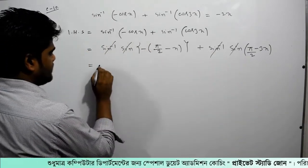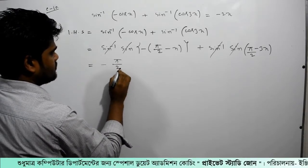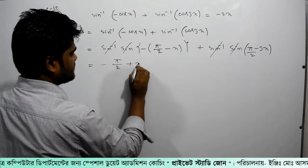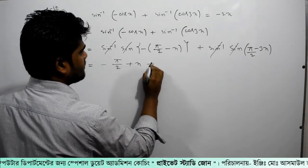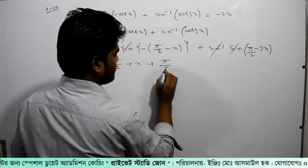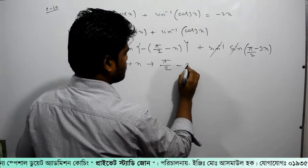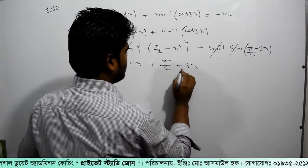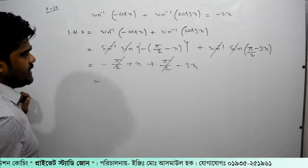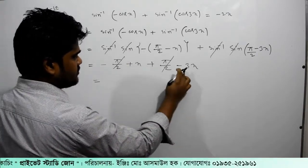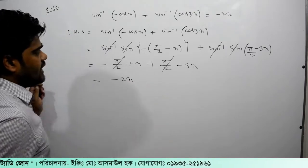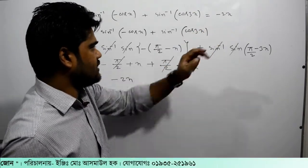Combining the results: minus pi by 2, plus x, plus pi by 2, minus 3x. The pi by 2 terms cancel. We get x minus 3x, which equals minus 2x. This is our answer.